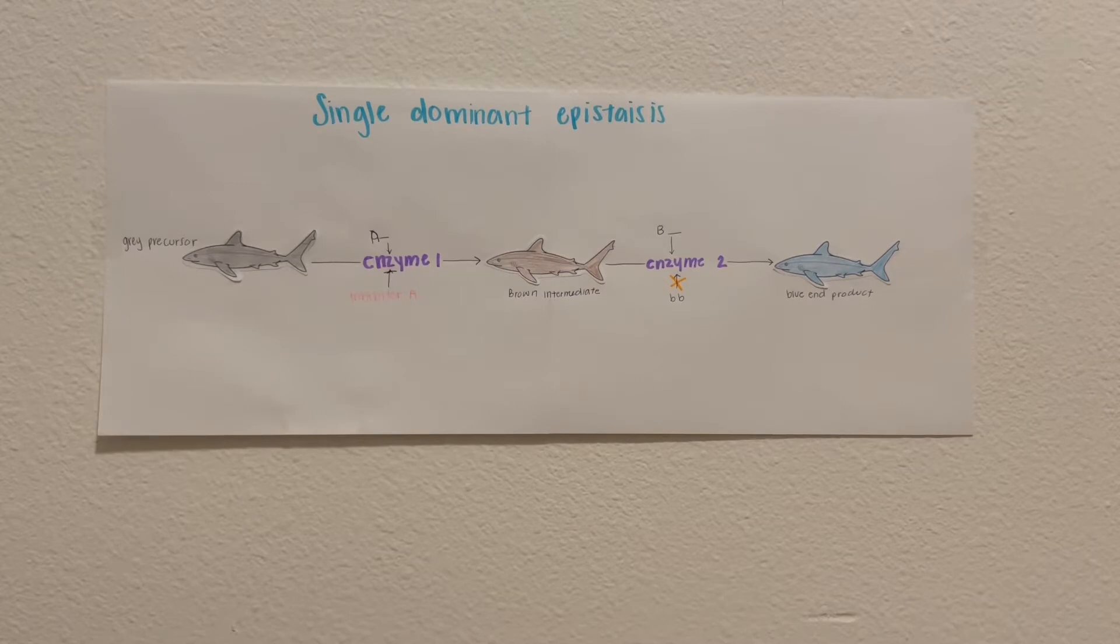In single dominant epistasis, the capital A genotype results in a repressor that prevents conversion of the precursor to the intermediate.